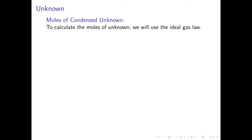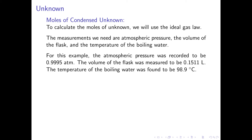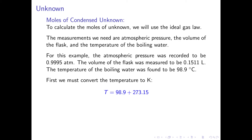Again, we will use the ideal gas law to calculate the number of moles of unknown that are vaporized. The measurements needed are atmospheric pressure, the volume of the flask, and the temperature of the boiling water. Both atmospheric pressure and flask volume remain constant. The temperature of the boiling water in this case was 98.9 degrees Celsius. Converting to Kelvin by adding 273.15 gives 98.9 plus 273.15, which equals 372.1 Kelvin.